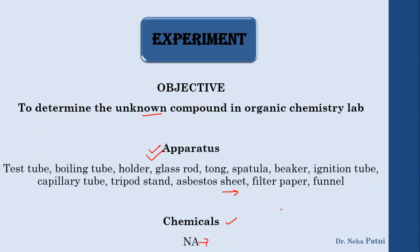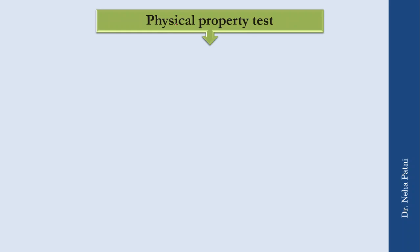The chemicals are not specified because it depends on which compound you have taken. The first step is to find out the physical properties of the compound. We will check the physical state — whether it is solid or liquid — and then observe the color.